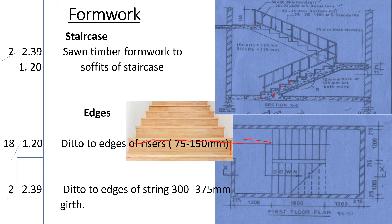Finally, the string edges. Our soffit has exposed edges on the string sides — one side on each flight. The other sides are held by the wall, so we only need the outer string edges. Our hypotenuse length is 2.38 meters, and there are two string edges — one each side — so we multiply by two. We book this as: edges to string, 300 to 375 millimeters cut.